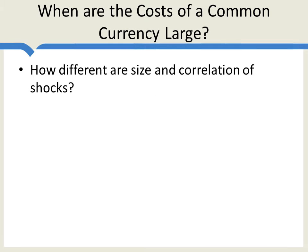So when are the costs of a common currency likely to be large? A key cost of having the same currency as another country is a reduced ability to respond to national shocks. So a key question is: how different are the size and correlation of shocks across different economies in the same common currency area? And for the case of the Euro, the answer was: very different.